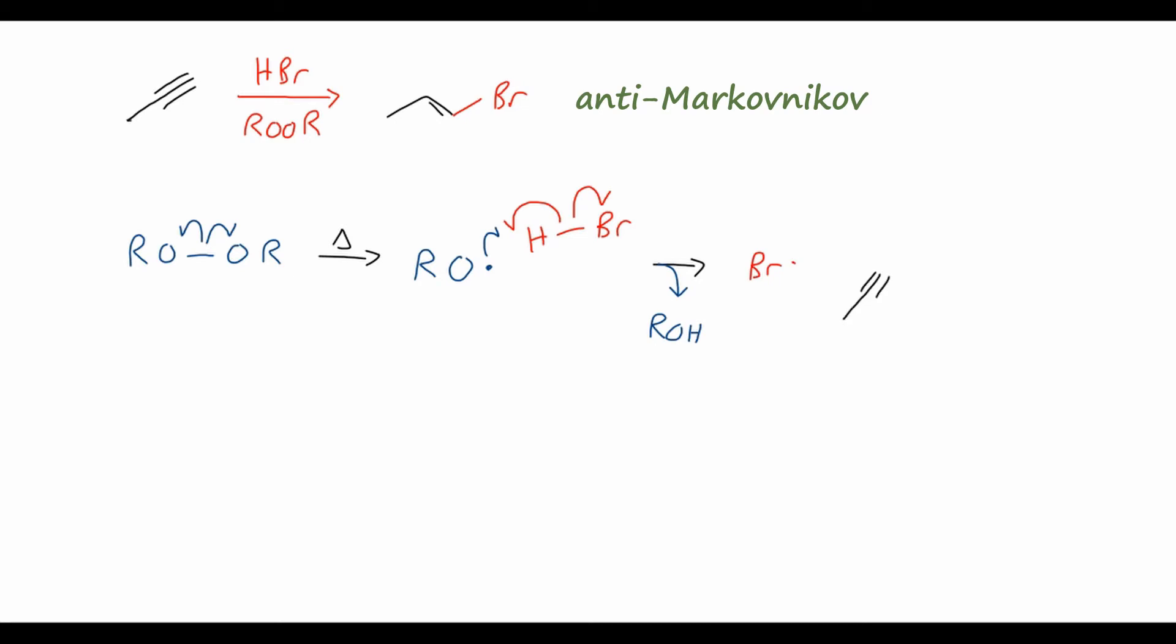Finally, this radical is going to react with the alkyne, so we have our propyne starting material. That radical is going to open up one of the pi bonds of the alkyne, giving us this alkenyl radical here. Remember, the radical is going to be formed on the more substituted carbon, which will give us the bromine on the less substituted carbon.